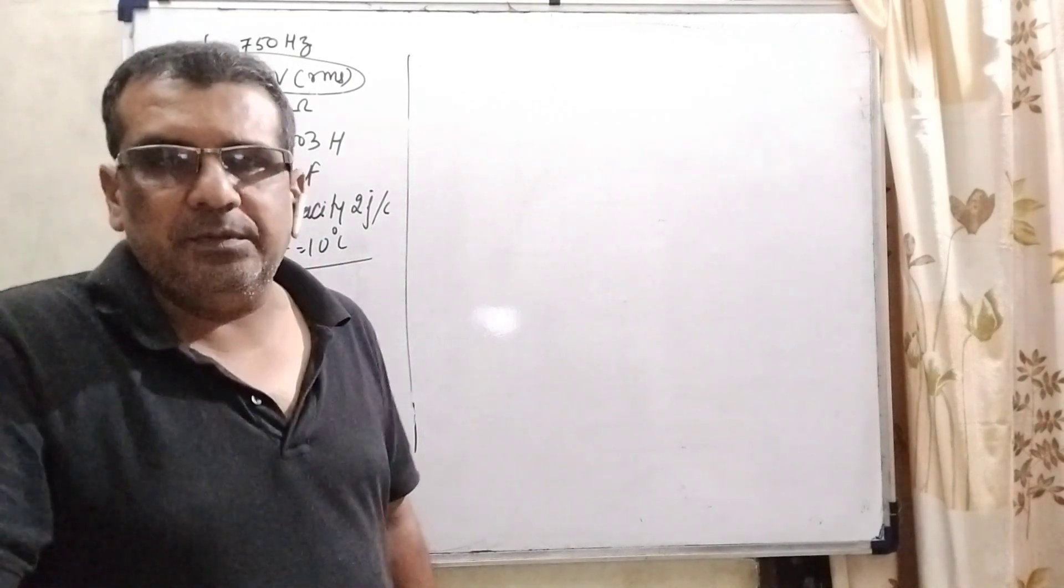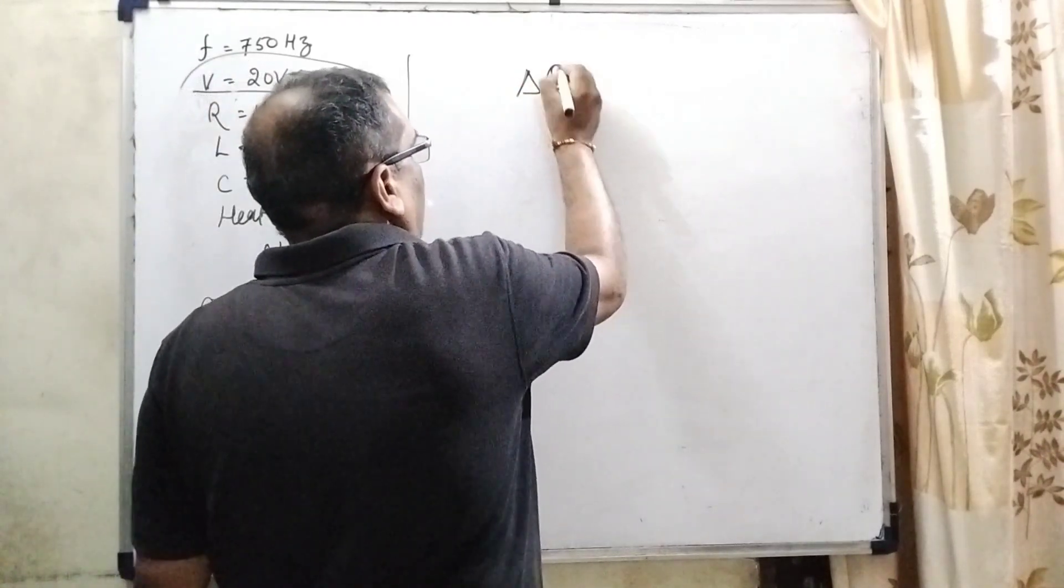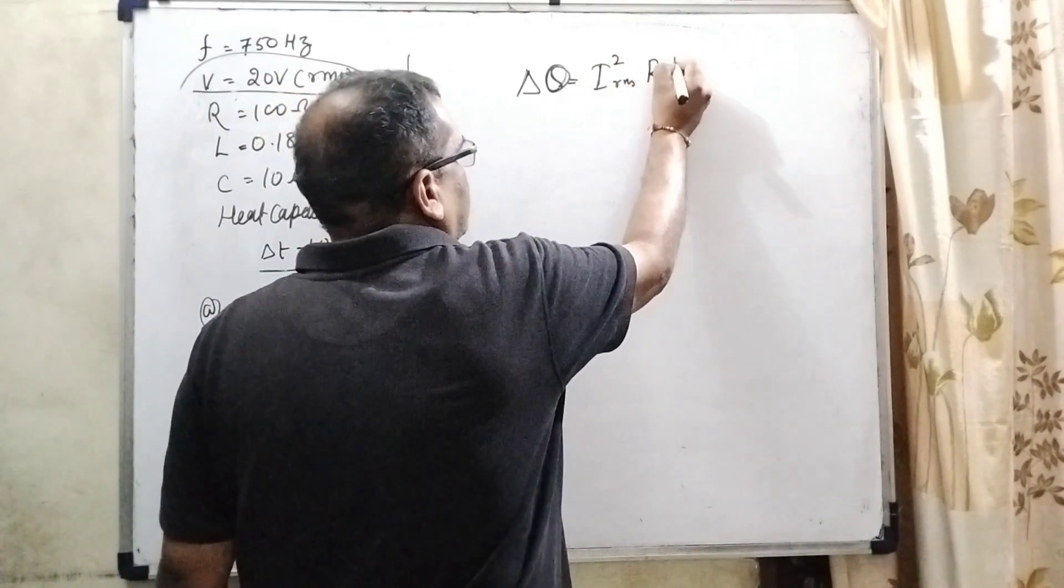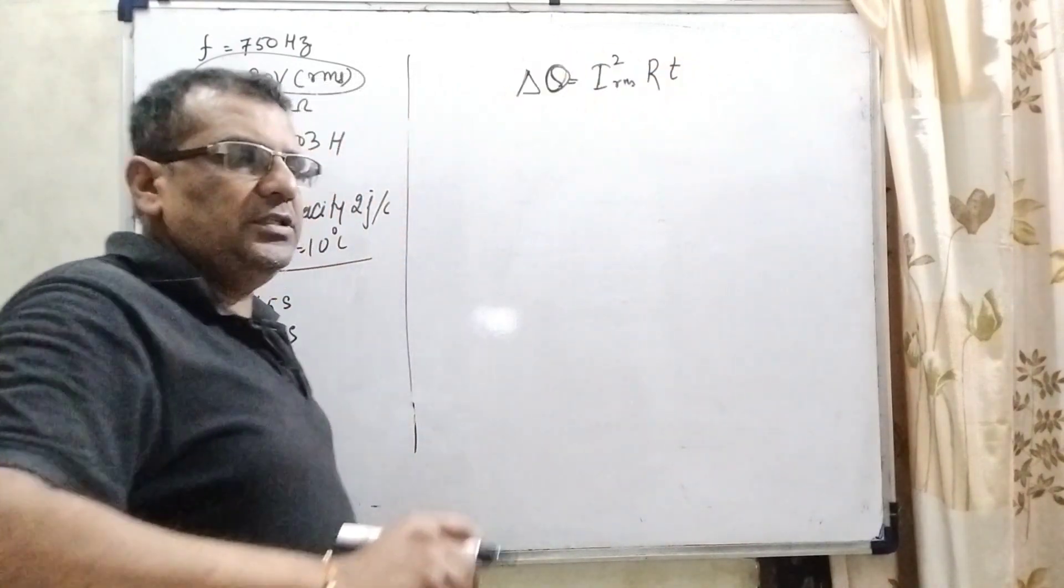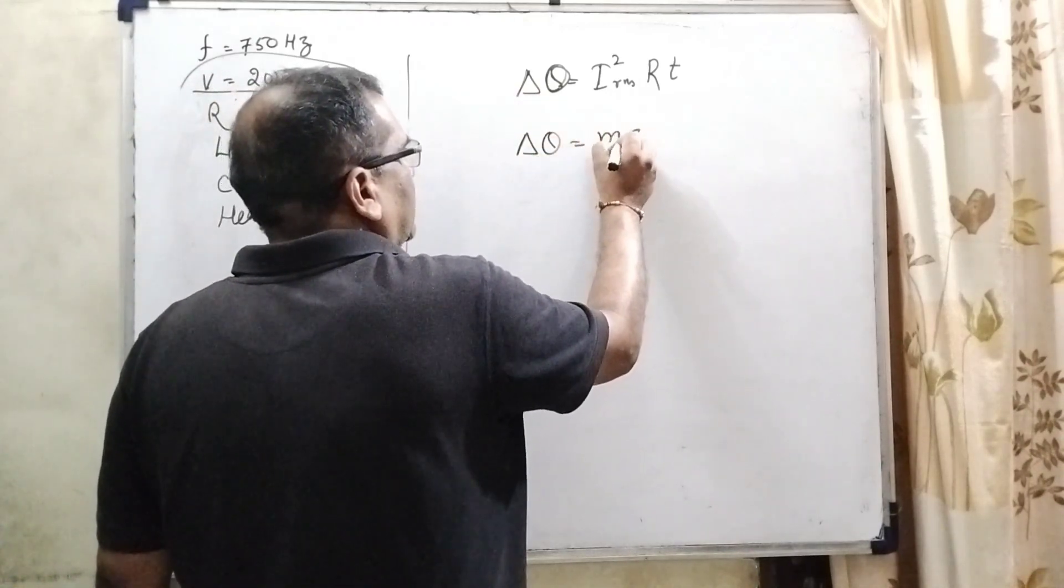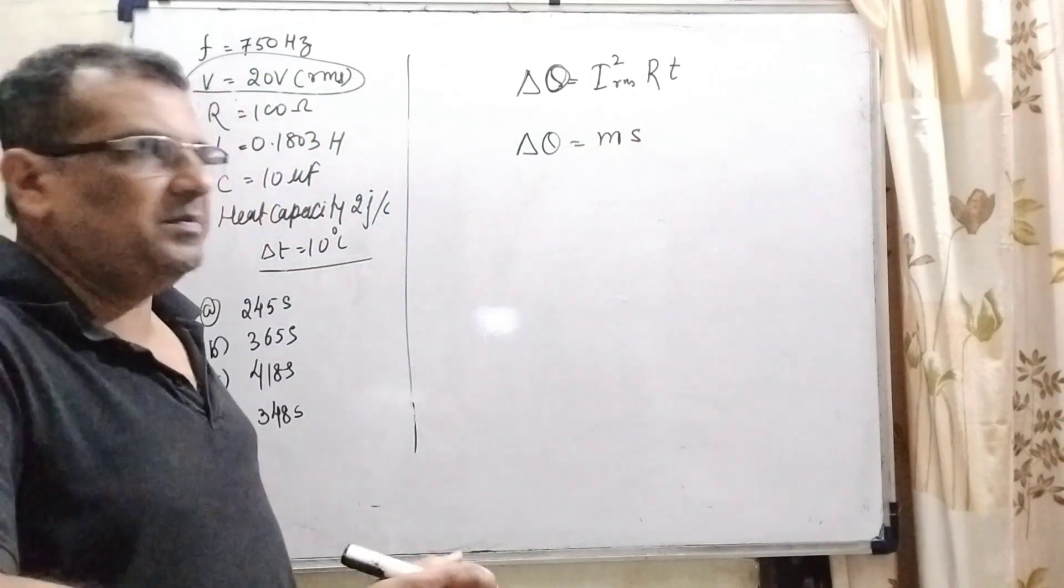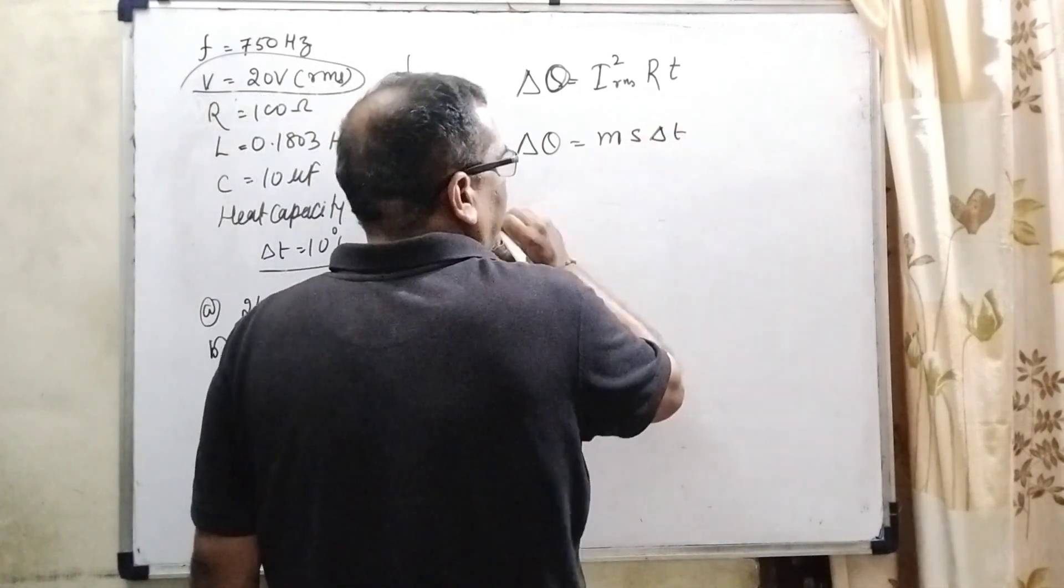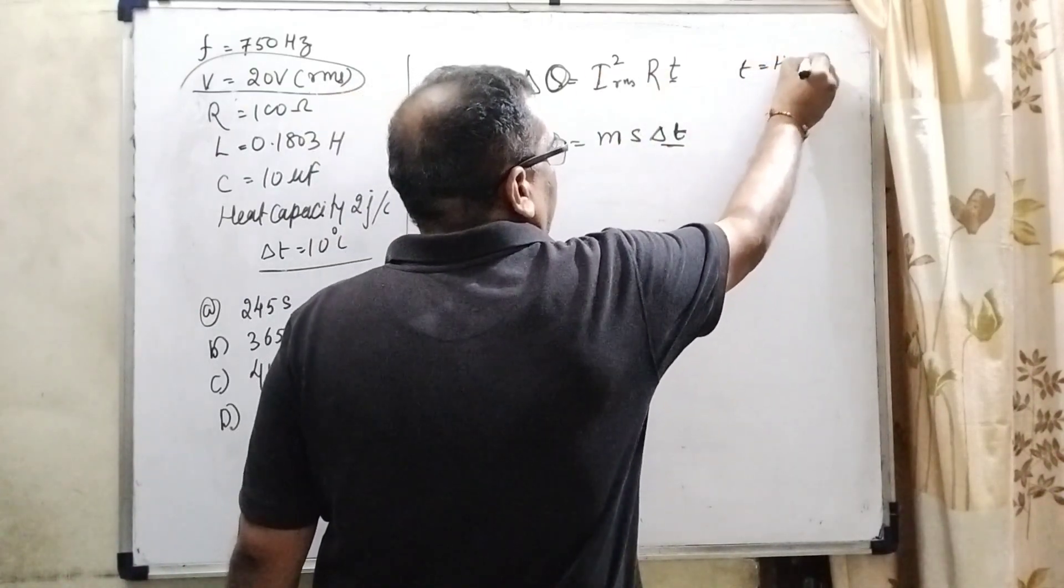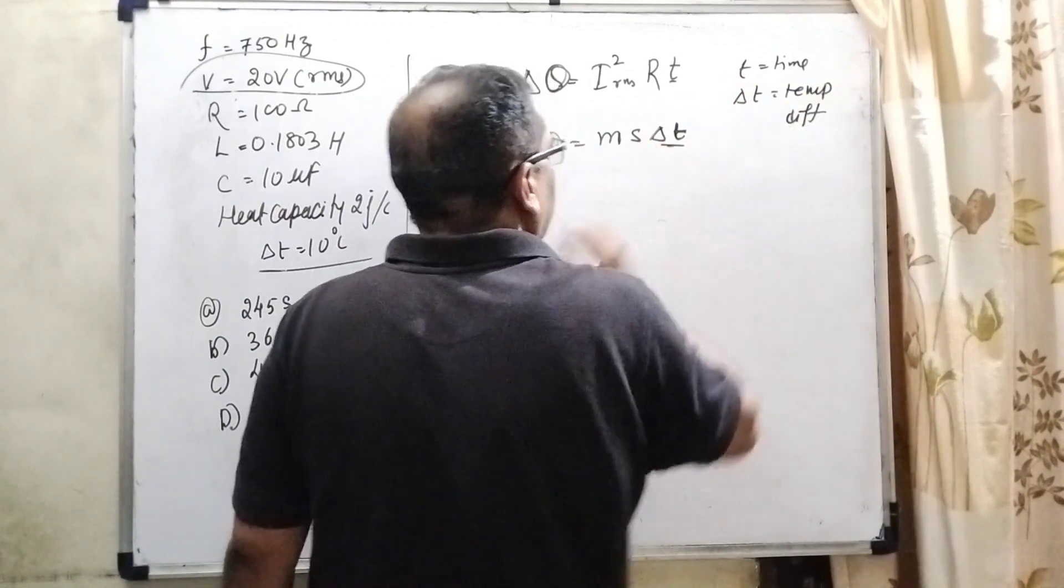So therefore, we know that very well in the heating effect of current, heat required or heat produced by the flow of current is I²RMS × R × t, where t is time, R is resistance, and IRMS. And this energy is equal to, by the thermometry or calorimetry rule, required heat of any substance that depends on the mass, specific heat, and temperature difference. This is delta T, the temperature difference, and this is the time, small t.